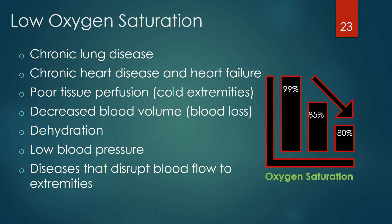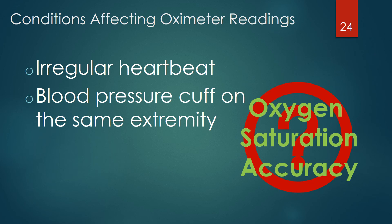Low O2 saturations can be caused by a variety of acute and chronic lung and heart diseases, heart failure, poor tissue perfusion associated with cold extremities, decreased blood volume due to blood loss or dehydration, very low blood pressure, or other diseases that disrupt blood flow to the arms and legs. An irregular heartbeat can make it difficult for the pulse oximeter to record an accurate reading. If a blood pressure cuff is on the same arm as a pulse oximeter, the cuff interferes with blood flow when it pumps up, causing low oximeter readings.